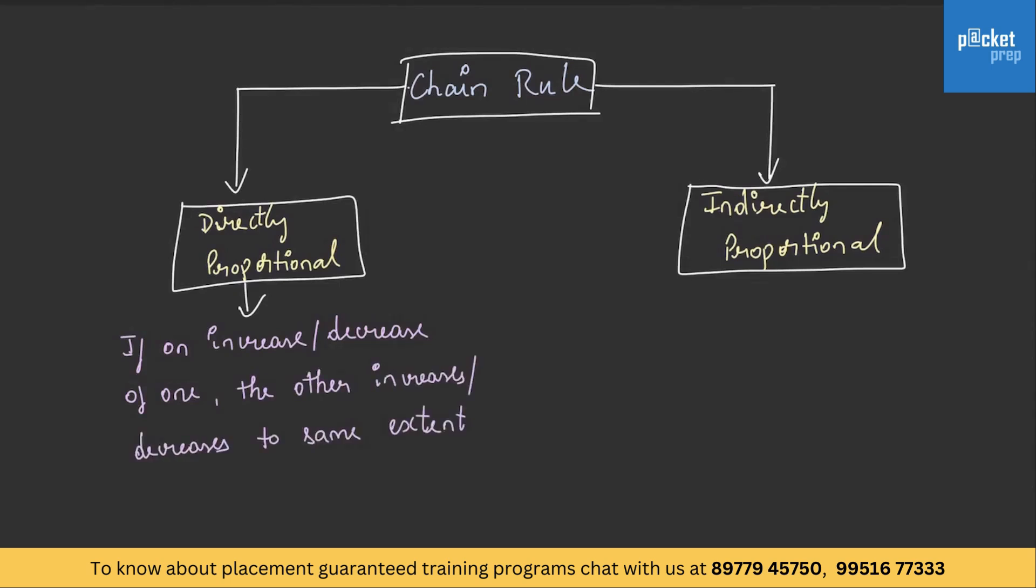Indirectly proportional is opposite to directly proportional. That is, if on increase of one quantity the other decreases and vice versa. An example of directly proportional is: if the number of items to be purchased increases, then cost also increases. On the other hand, the example for indirectly proportional is: if number of men increases, then the work time decreases.